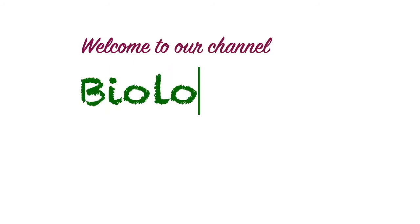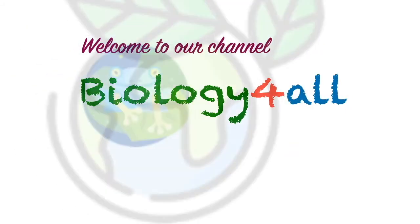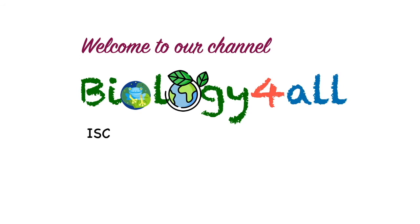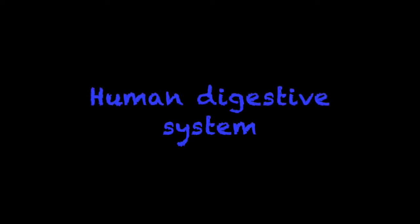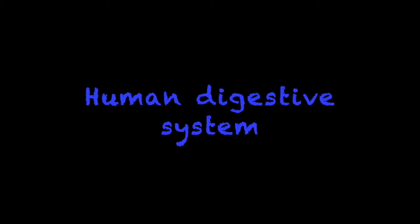Hello everyone, welcome to our channel Biology for All. In this video, I'm going to show you how to draw and label the human digestive system. We first draw double lines representing the oral cavity and the esophagus.